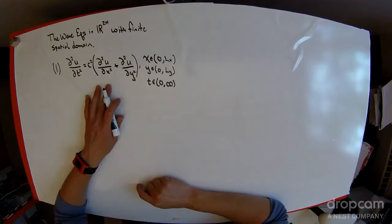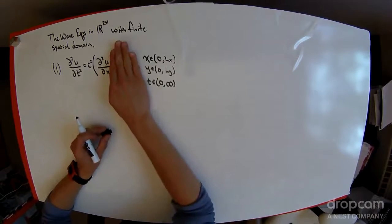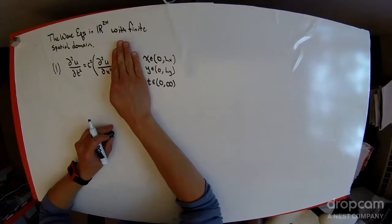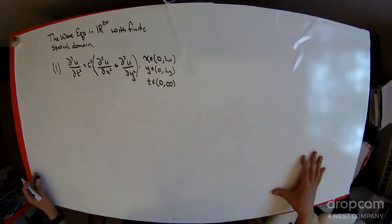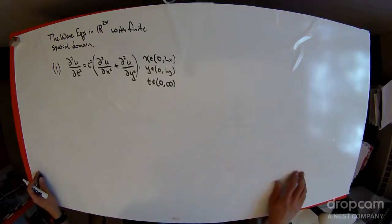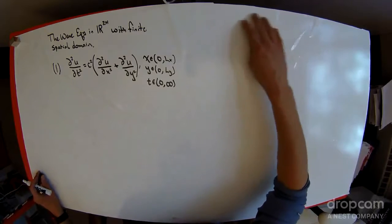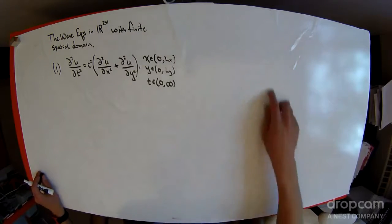Where this might model, where the wave equation in one dimension of space and one dimension of time might model the ideal oscillations of an elastic string of finite length. What this models is the ideal vibrations of a rectangular, ideally elastic membrane.